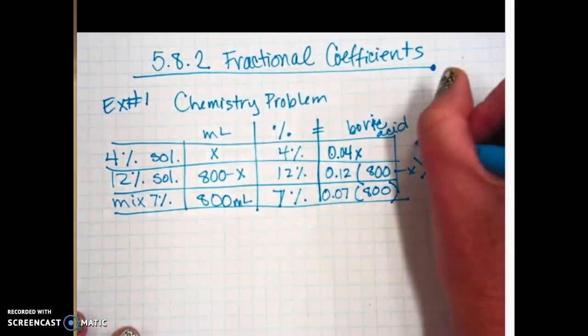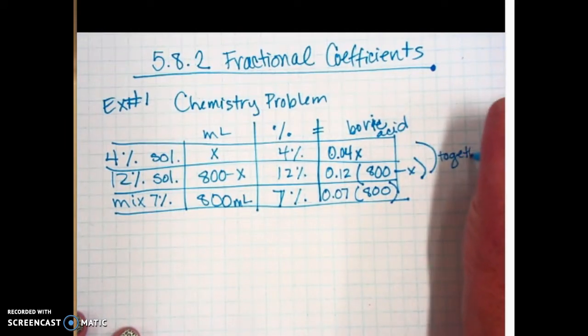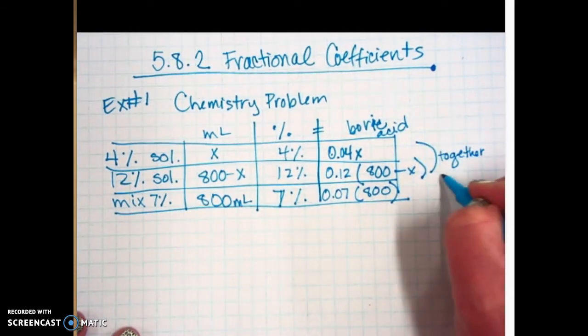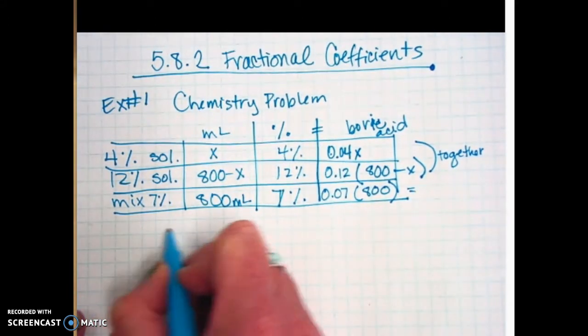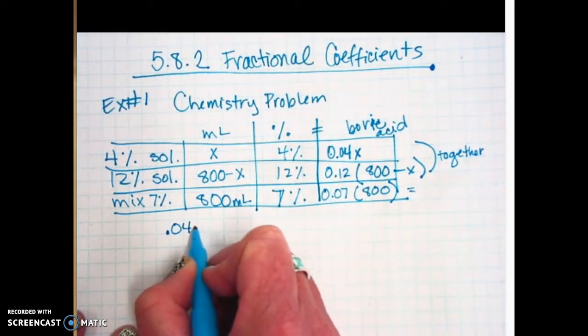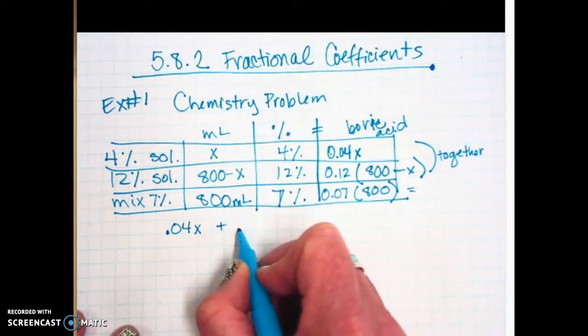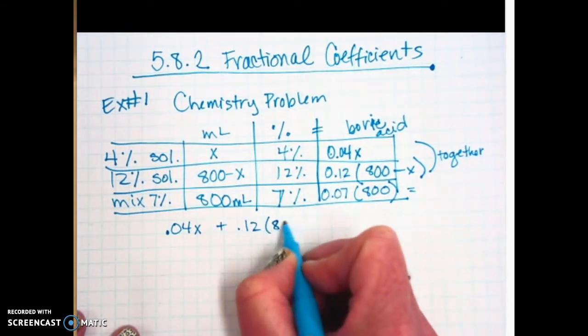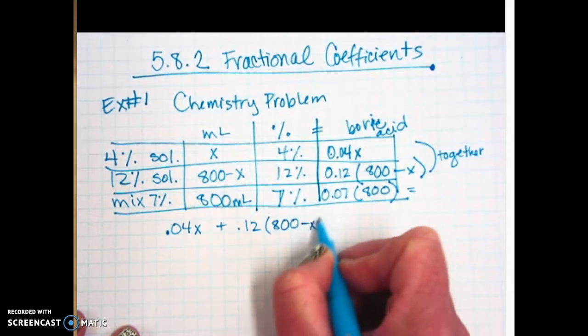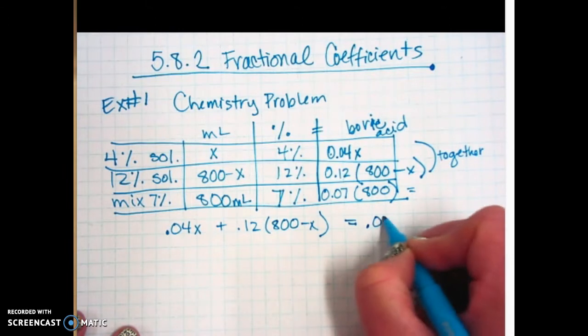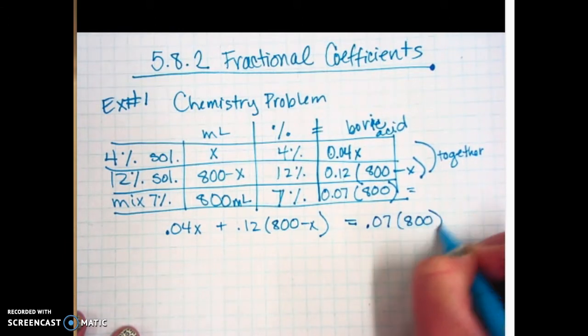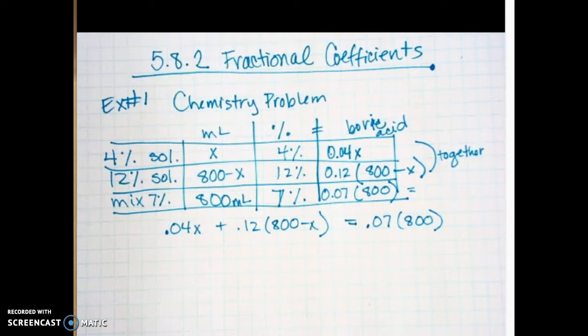These two together are going to equal this third one. So for the equation, we're going to take the 0.04x, add the 0.12 times the 800 minus x. And that's going to be equal to the 0.07 times the 800.